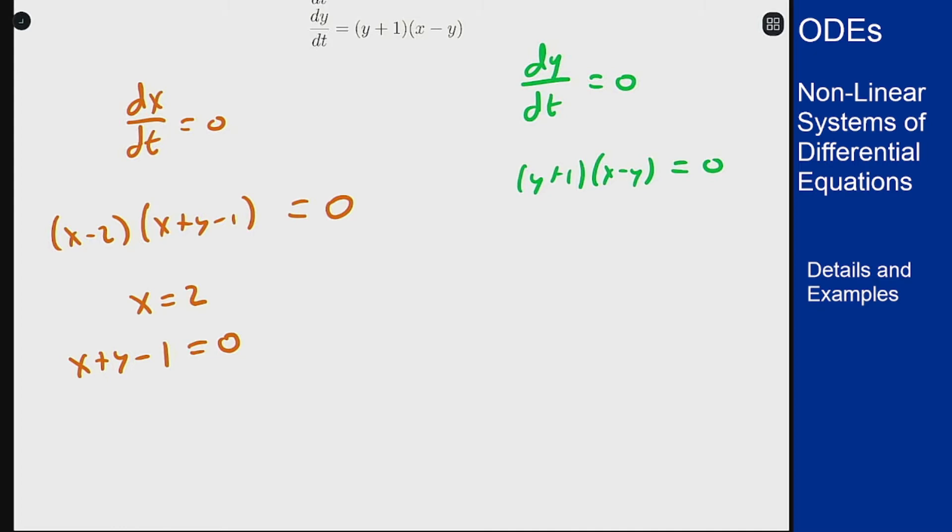For the second equation for dy/dt being zero we get that either y equals minus 1 or x equals y because x minus y equals zero.